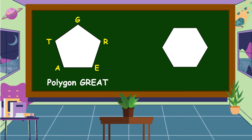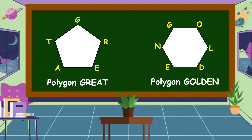We are going to name also the vertices of the second polygon. This is vertex G, vertex O, vertex L, vertex D, vertex E, and vertex N. We call this polygon as polygon GOLDEN.